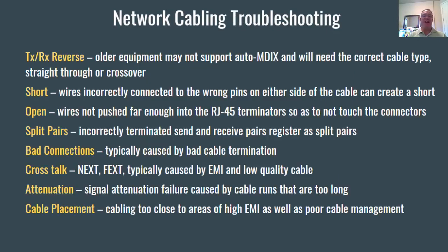Now let's look at network cabling troubleshooting. Troubleshooting issues include TX/RX reverse — with older equipment that has no auto-crossing, you may need a crossover cable when connecting switch to switch. You could have a short, where wires are incorrectly connected to wrong pins creating a short. You could have an open, where wires weren't pushed far enough into the RJ45 terminators to touch the brass connectors. You could have a split pair, with incorrectly terminated send and receive pairs. Bad connections can also result from poor cable termination.